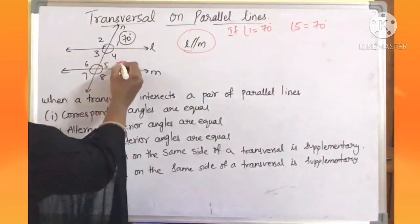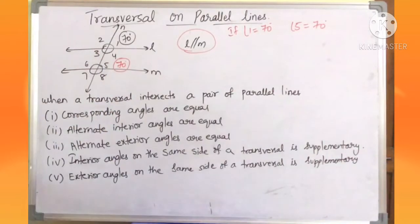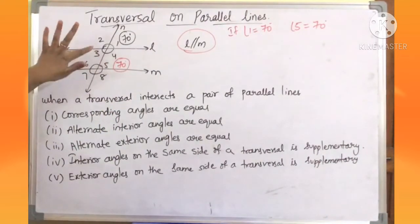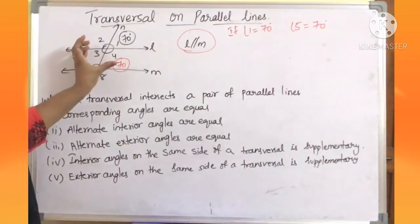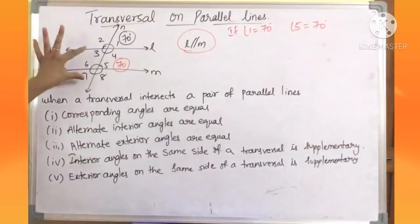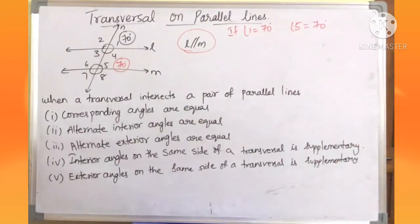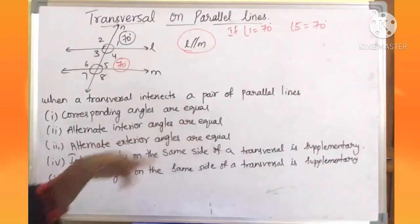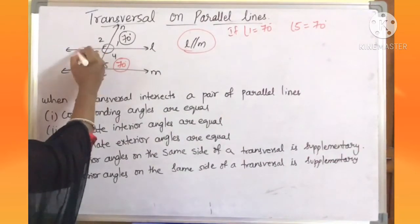Suppose you get angle 5 as 70 — now what about angle 3? Let us find the relation between angles 5 and 3. They are both interior angles on either side of the transversal and not on the same side. So angles 3 and 5 form alternate interior angles, and alternate interior angles are equal. So angle 3 is also 70.